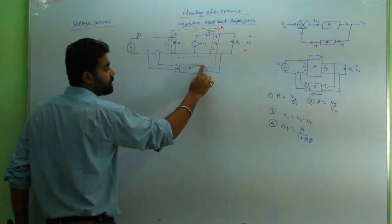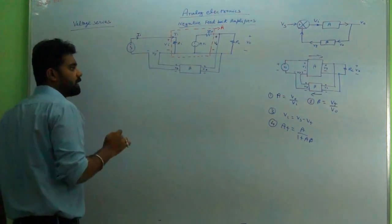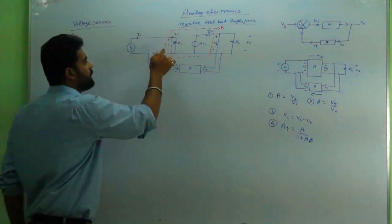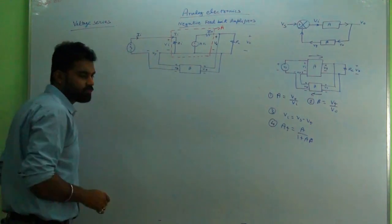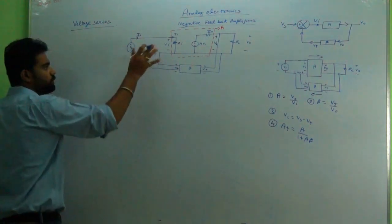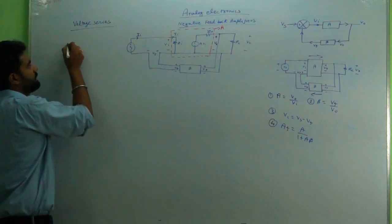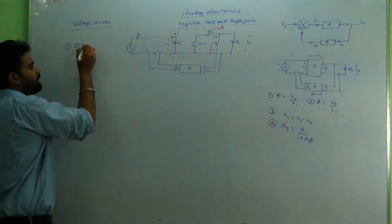That is fed back to Vo to give Vf, and so we are getting equation 3: Vi = Vs - Vf. So we have to deal with input and output impedance. First we will deal with ZIF.